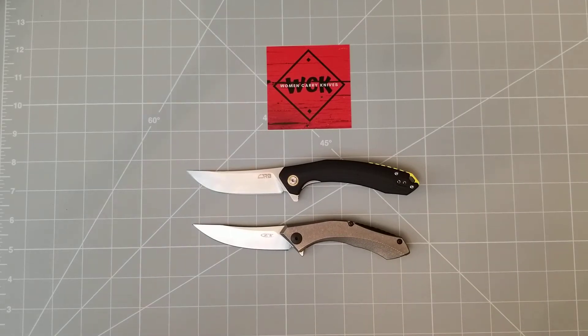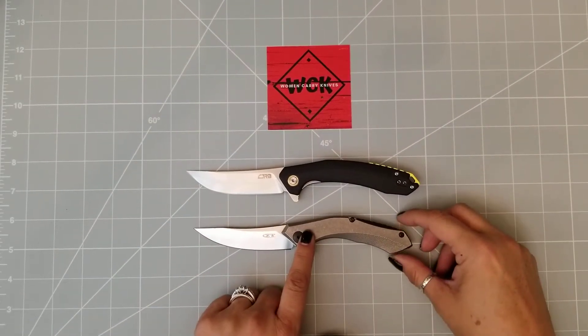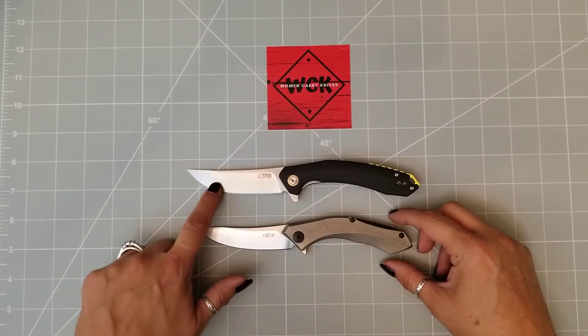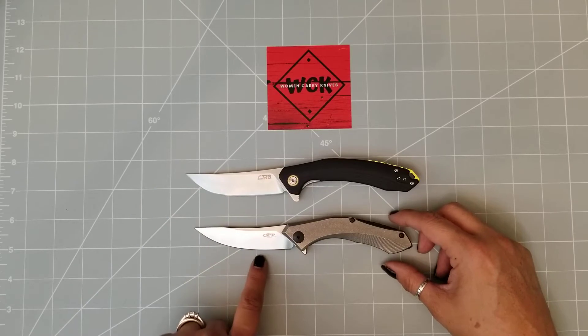Now, in my opinion, completely different looking. So you can see they both have the Persian style blade, a little bit upswept. There's a little more belly on the CJRB than there is on the ZT.